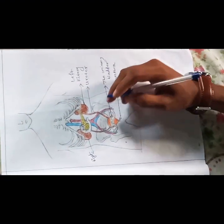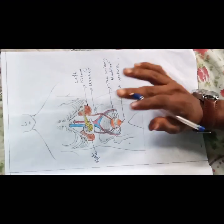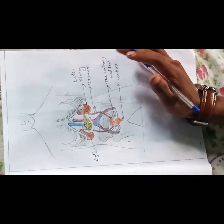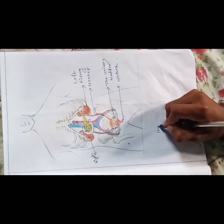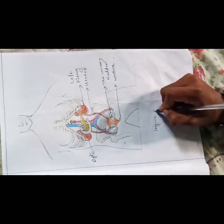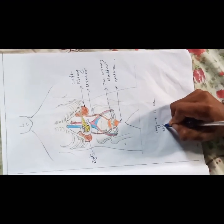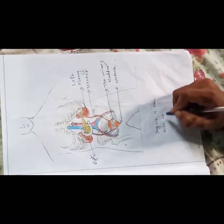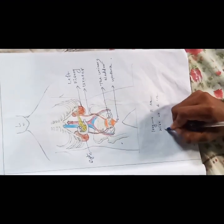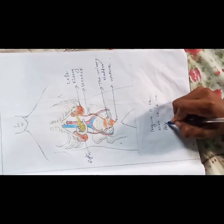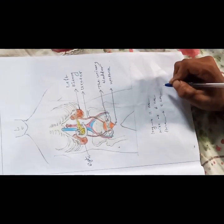Kidneys are bean-shaped organs about 11 cm long, 6 cm wide, 3 cm thick, and weighing about 150 grams.